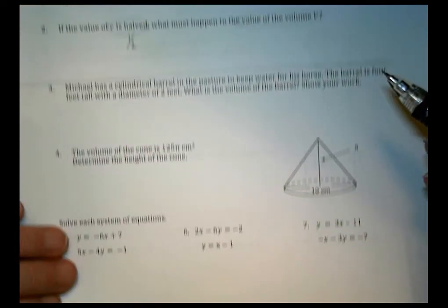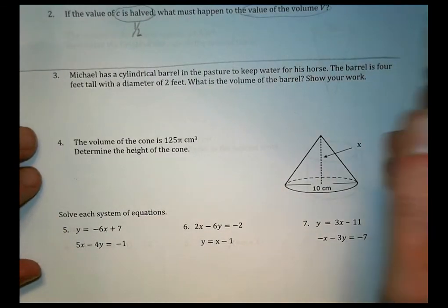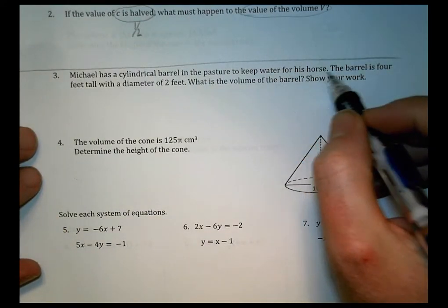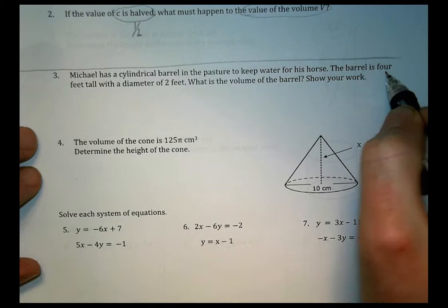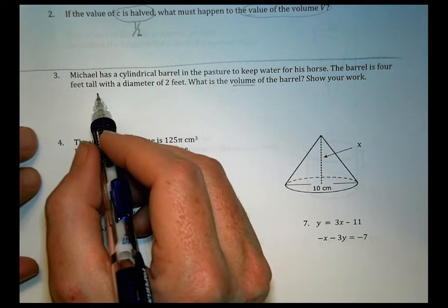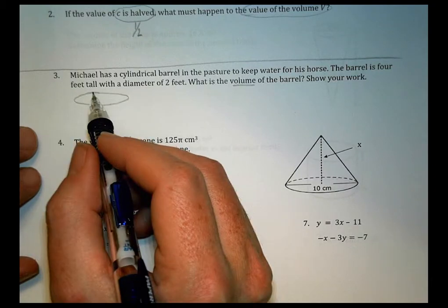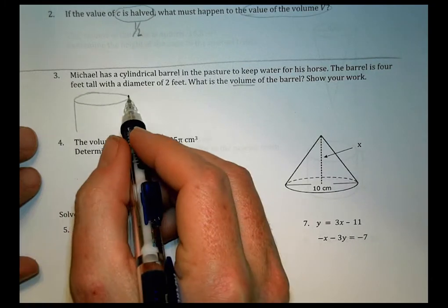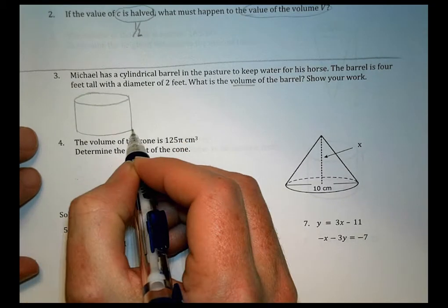Moving on. Number three, Michael has a cylindrical barrel in the pasture to keep water for his horse. The barrel is four feet tall with a diameter of two feet. What's the volume of the barrel? So what do we have? We have a barrel here.